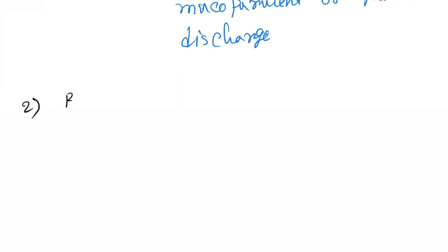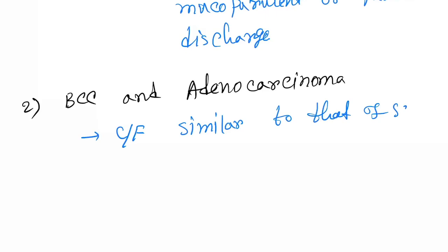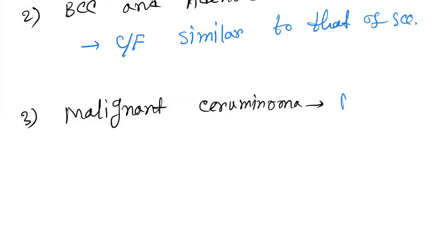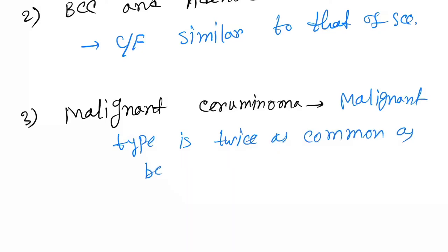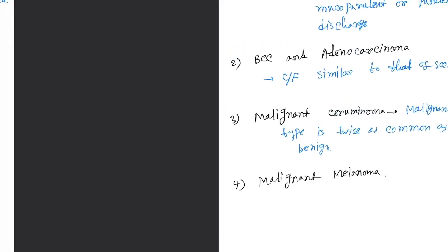The next malignant tumors of the EAC are basal cell carcinoma and adenocarcinoma, with clinical features similar to squamous cell carcinoma. There is also malignant ceruminoma, where the malignant type is twice as common as the benign. The last is malignant melanoma.